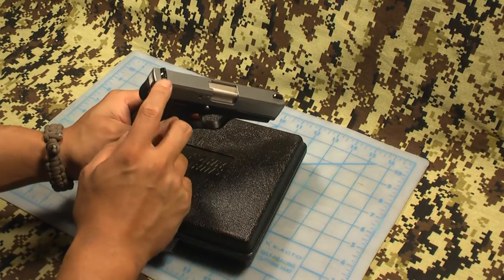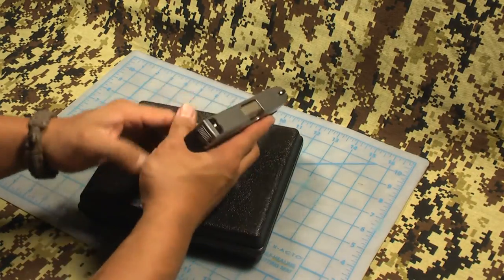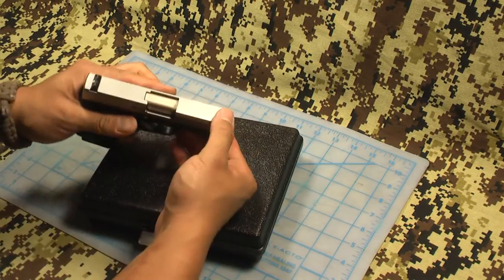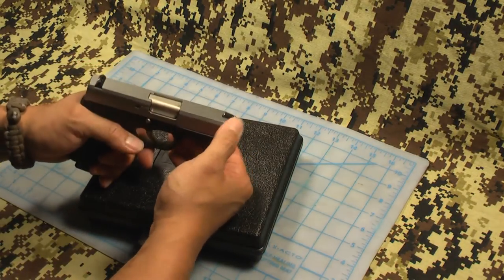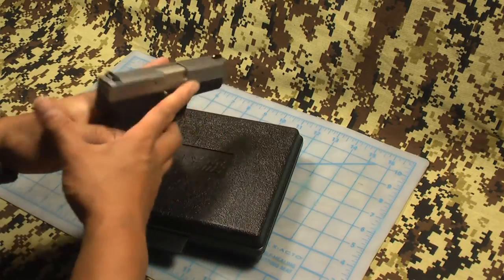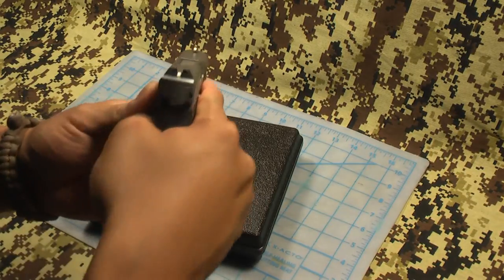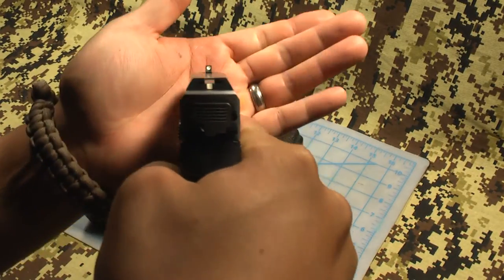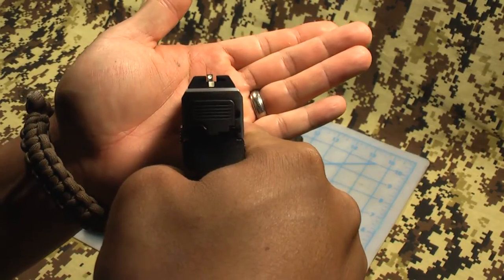The sights in the rear are steel, driftable. These are bar dot sights. The front one is a polymer staked front sight, non-adjustable. To give you a little idea of the sight picture, that is what that looks like.